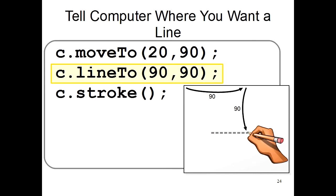c.lineTo tells the computer that you want to draw a line somewhere. That 90,90 gives the position where you should move your pen while drawing the line.